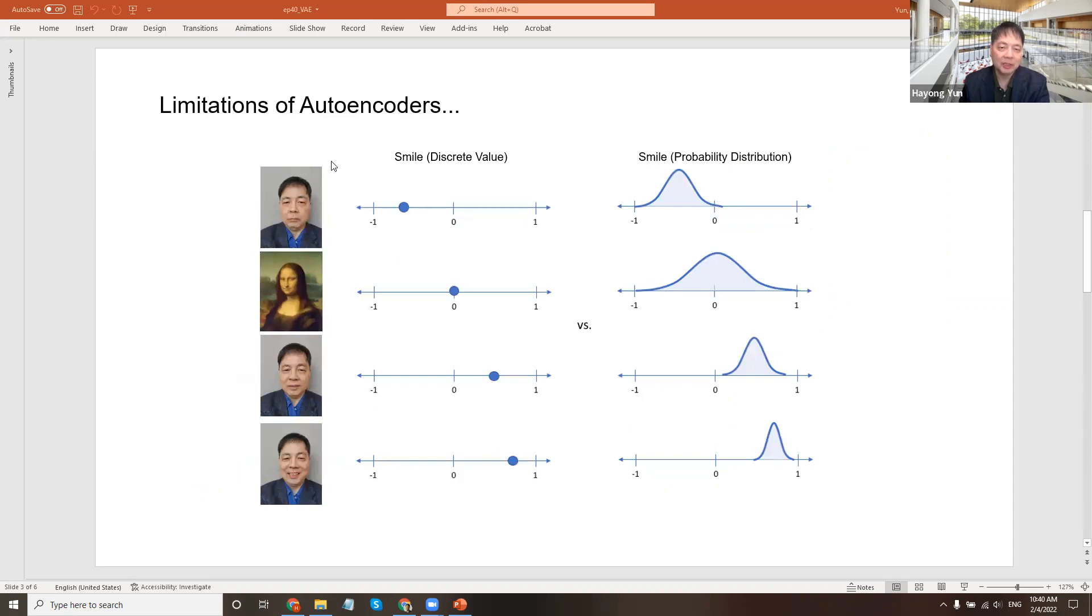However, there are some limitations of autoencoders. For example, smile. Let's say this picture is a smile of 0.6. But is it? There are gradations of it. What an autoencoder does is it's like a discrete value. It's like Mona Lisa - I'm not sure if it's smiling or not. This one is a little closer to smiling, and this one has a smile.